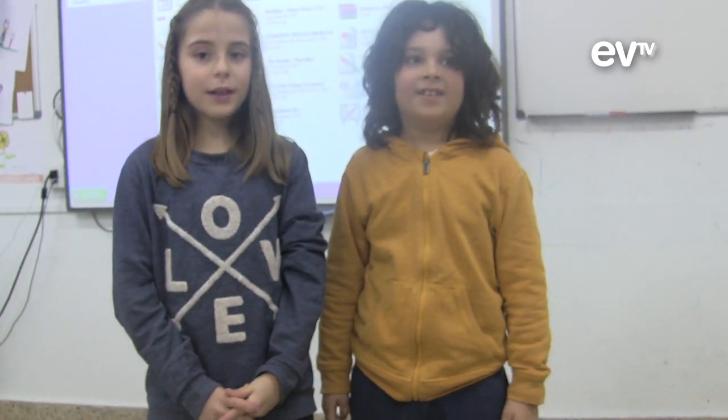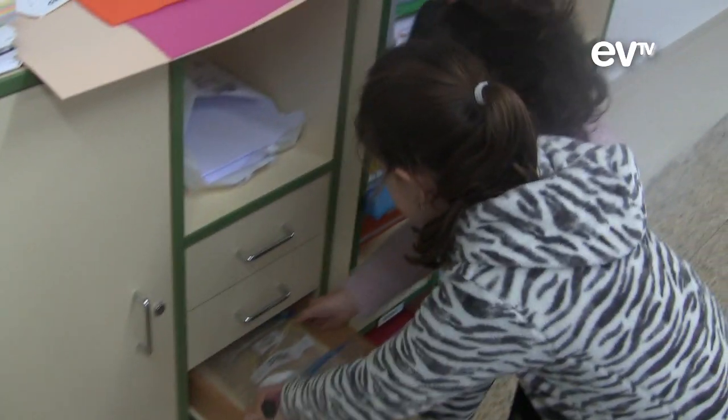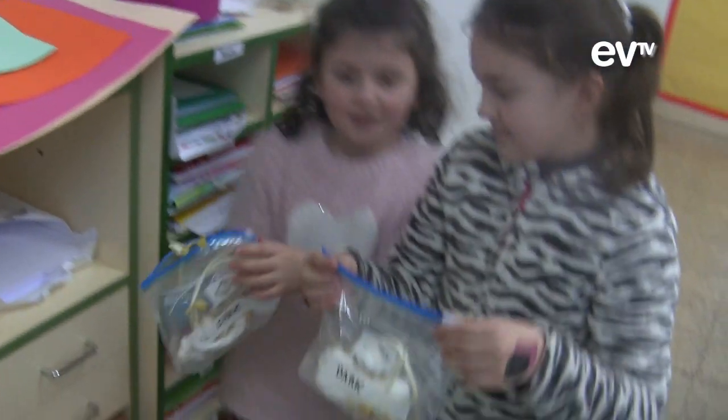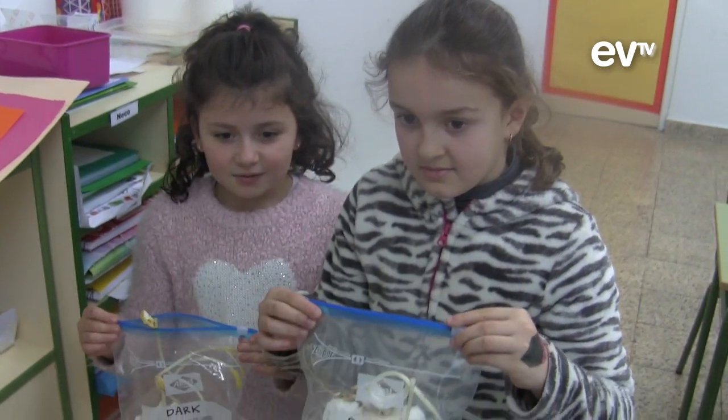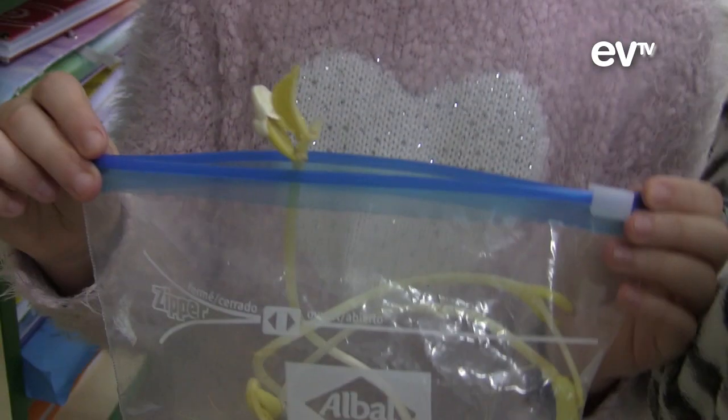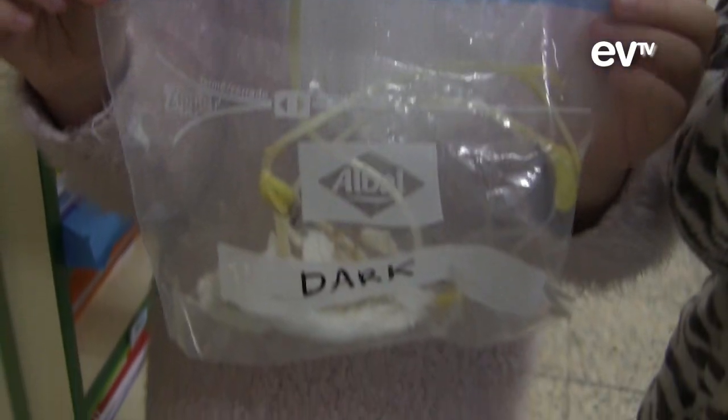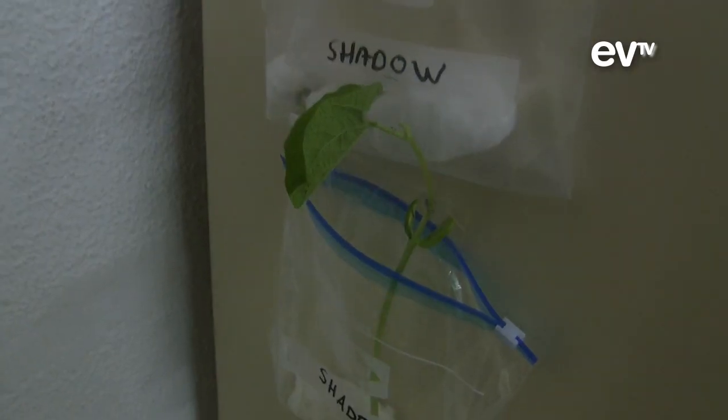It's been two weeks. Let's check the plants. The ones in the dark have grown a lot, but the leaves are not green — they are yellow. The ones in the shade have grown too, and the leaves are greener and look better.